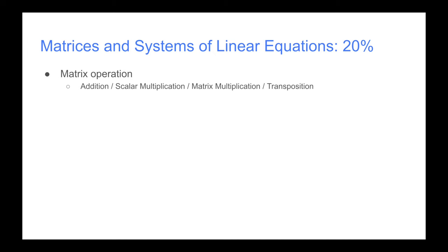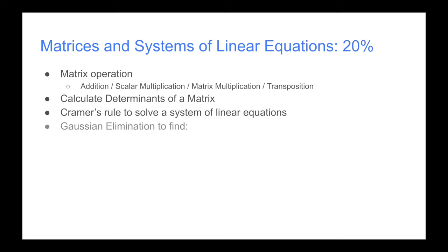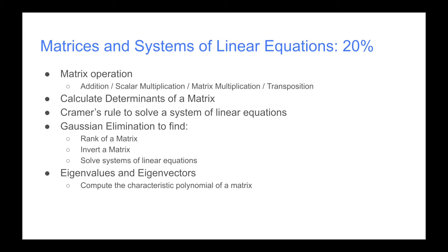Here we're going to be doing matrix operations such as addition, scalar multiplication, matrix multiplication, and transposition. We also need to calculate determinants of a matrix, know how to use Cramer's rule to solve a system of linear equations, as well as Gaussian elimination to find the rank of a matrix, invert a matrix, solve systems of linear equations, as well as looking at eigenvalues and eigenvectors. We use them to compute the characteristic polynomial of a matrix. We also need to determine whether a matrix is diagonalizable and find a diagonalizing matrix.